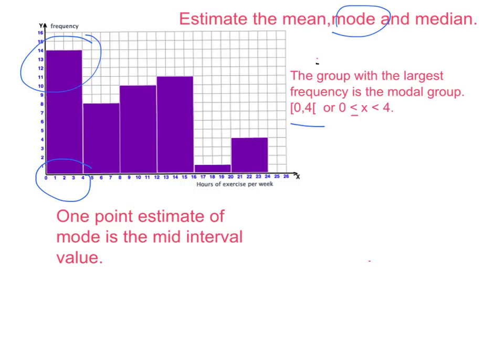And if you want to find a point estimate of mode, well then this is going to be just the mid interval value of this particular group. That is 0 plus 4 divided by 2, or just 2.